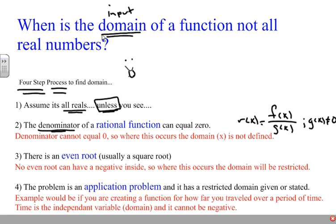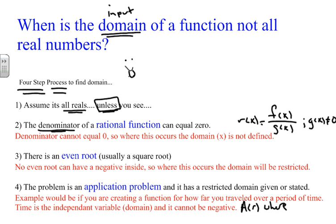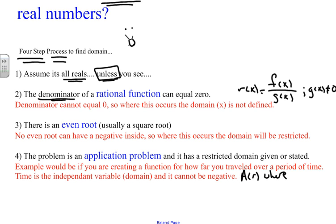Also, the final thing is application problems that have a restricted domain given or stated. For example, if you have a function talking about areas of a circle — a of r, area of a circle — r is the domain, r is the radius. Obviously r has to be greater than zero, because a negative radius would be impossible, and a zero radius would mean no circle.